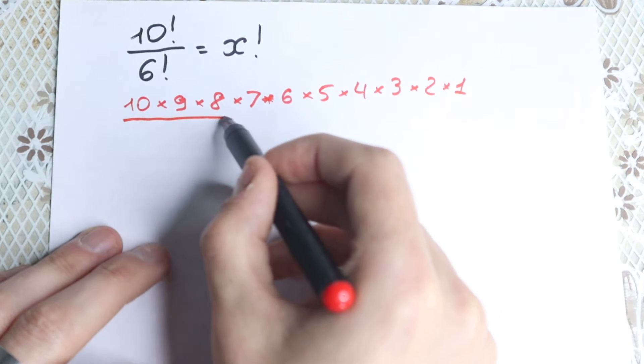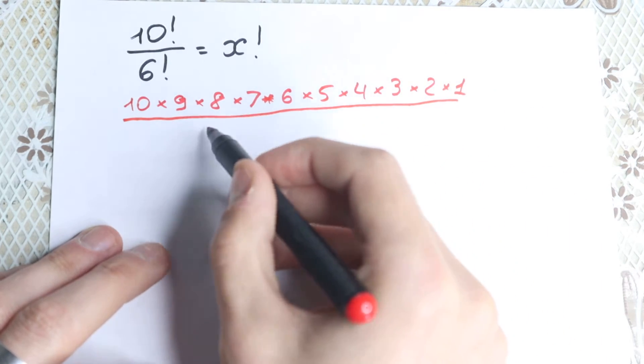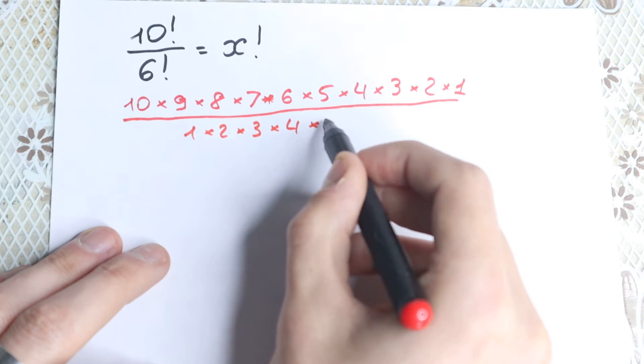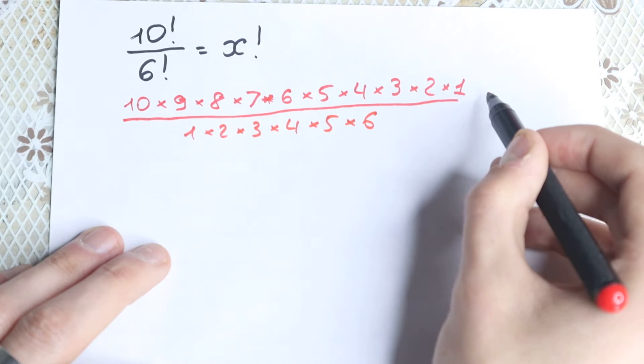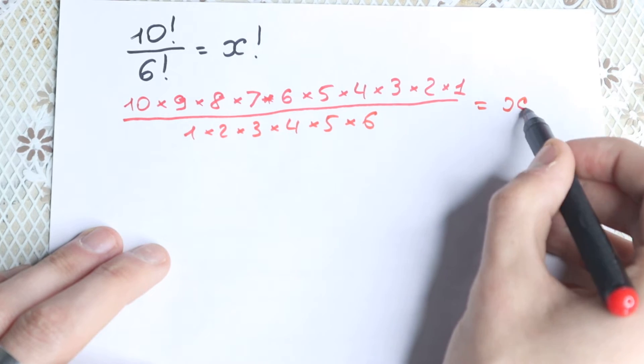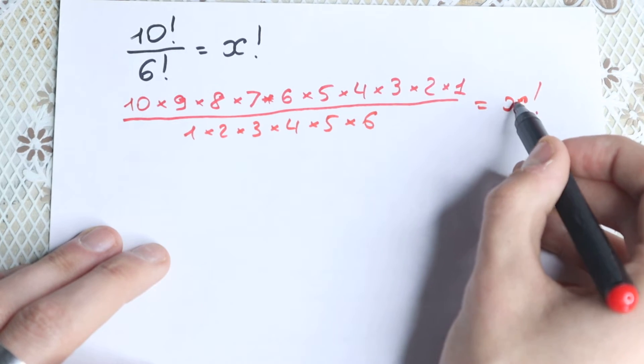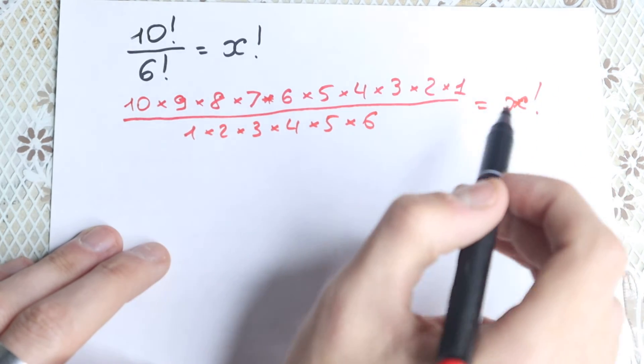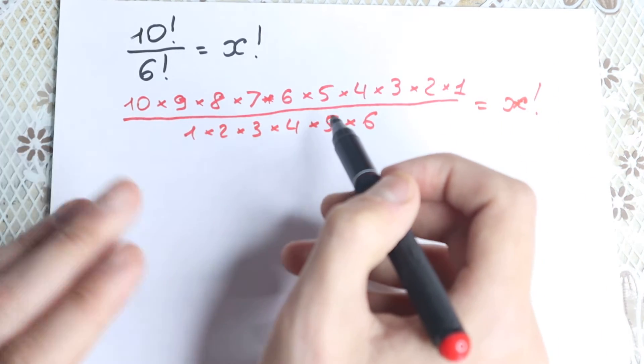And of course, 6 factorial, we all know this is our denominator. So we have like 1 times 2 times 3 times 4 times 5 and times 6. And of course on the right hand side equal to x, x factorial. So I just rewrote this question without factorials. Right here we have expression with numbers, so this is really good.